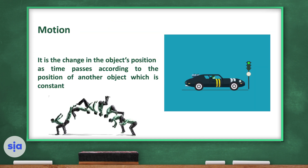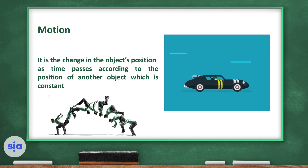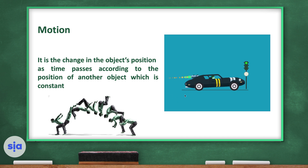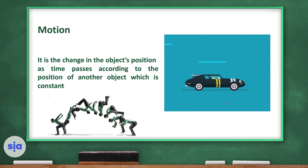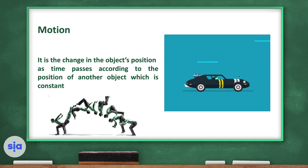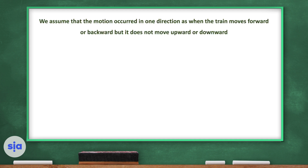The traffic light is the constant object and the car is the moving object. If we compare the position of the car to the traffic light that is constant or stationary, we will find that the car is moving. We assume that the motion occurred in one direction, as when a train moves forward or backward but does not move upward or downward.